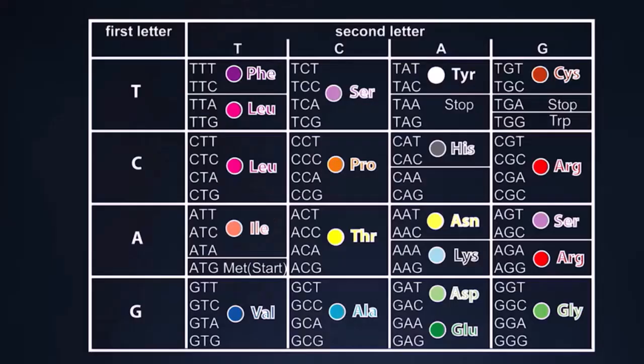DNA, in turn, consists of four building blocks called nucleotides: adenine, cytosine, guanine, and thymidine, abbreviated A, C, G, and T. The key is that every three letters of DNA tell which amino acid to incorporate into the protein. This is called the genetic code.